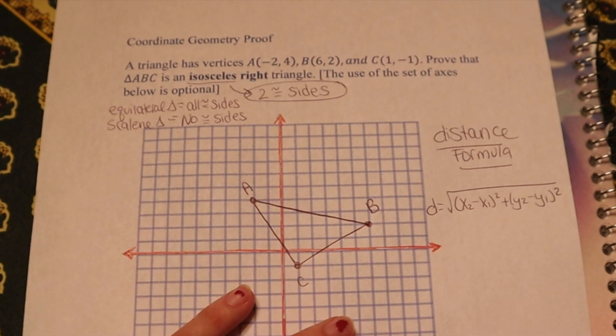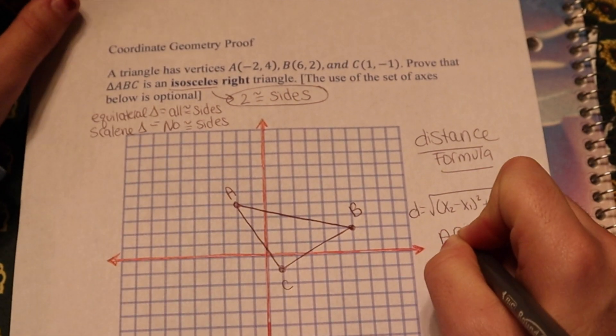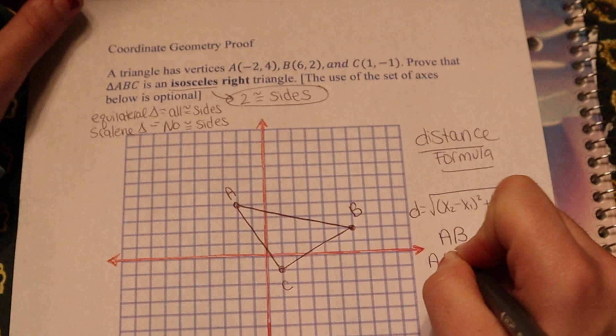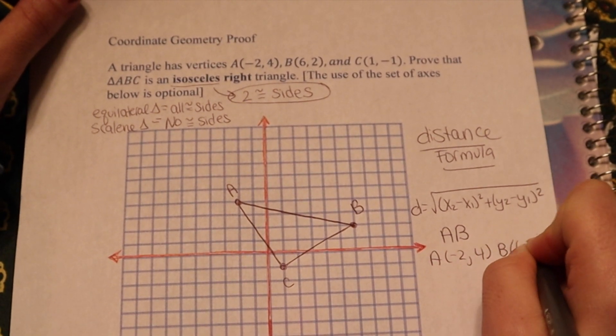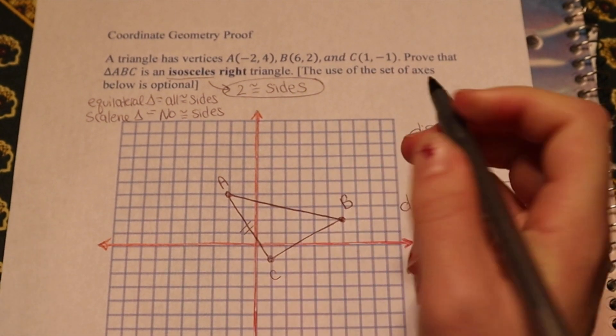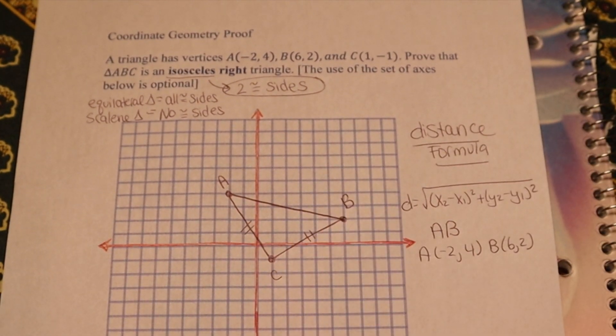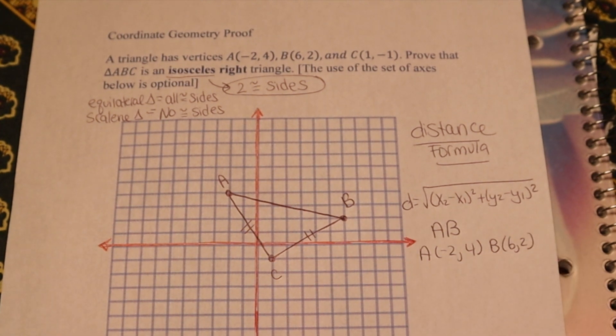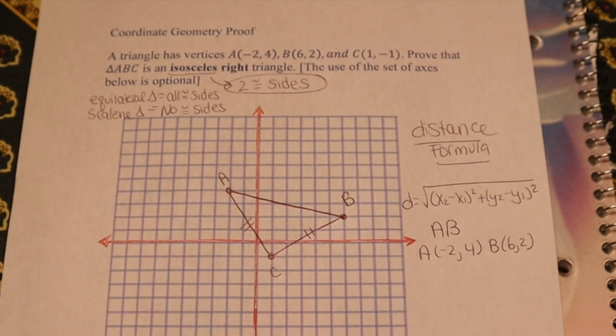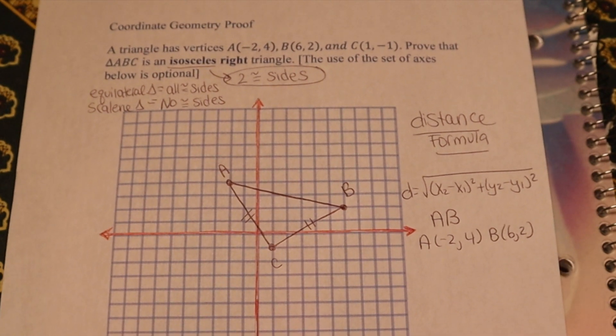So I'm just going to start off with side AB. A is negative 2, 4, and B is 6, 2. Honestly, it looks like AC and BC are going to be the congruent sides. So I'm going to leave this one to last. And if the other two don't end up being congruent, I'm going to find those. But just to save time, you can just look at your picture and see which ones look like they'll be equal, and then you can go ahead and do those first.